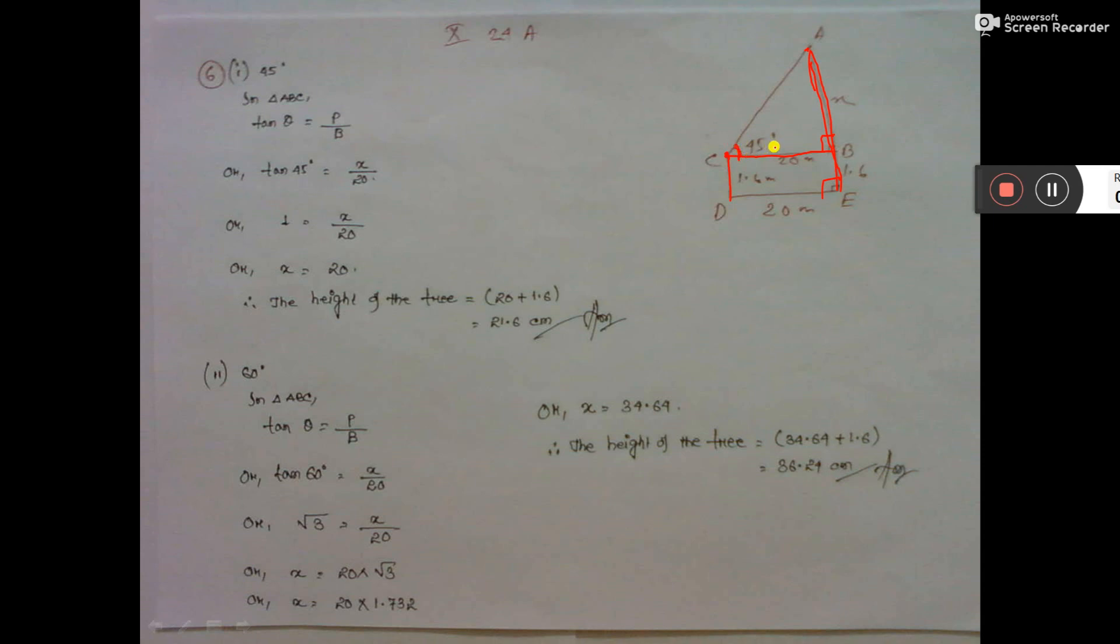Find the height of the tower in each case. Another one is 60 degrees, that one I will tell you later. First, I am explaining 45 degrees. Here you are drawing a parallel line, so this will also be 90 degrees.